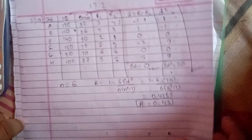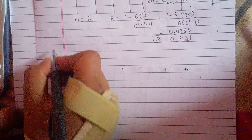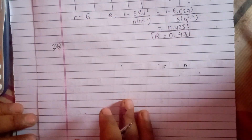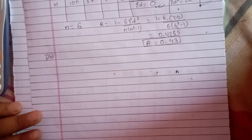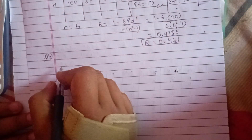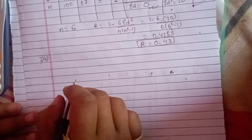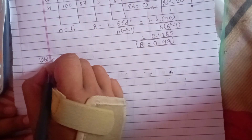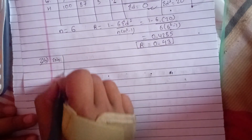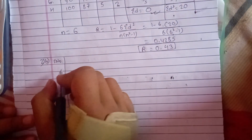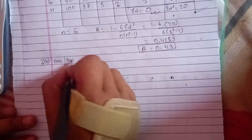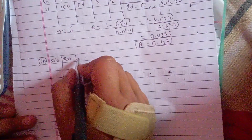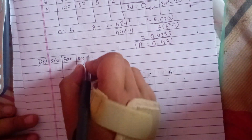This is the rank correlation. The rank correlation is small and the calculation is small. The marks obtained in statistics and accountancy are presented. The max is the marks in statistics and accountancy.